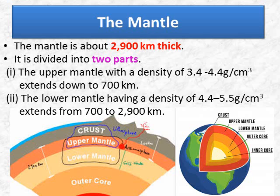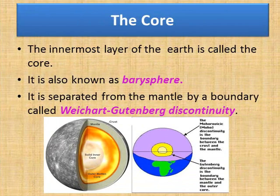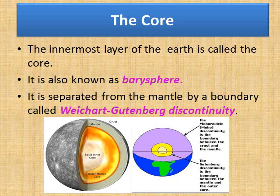So children, we have two parts for the mantle: the upper mantle with a density of 3.4 to 4.4 extending to 700 kilometers, and the lower mantle with a density of 4.4 to 5.5 extending from 700 to 2,900 kilometers. The uppermost solid part of the mantle and the entire crust make up the lithosphere. Now let us move on to the next layer — the innermost layer surrounding the earth's center — that is the core. The core is composed mainly of iron and nickel, and it is called NIFE. The inner core is in solid state and the outer core is in liquid or semi-liquid state. Barisphere is sometimes used to refer to the core of the earth or sometimes the whole interior.